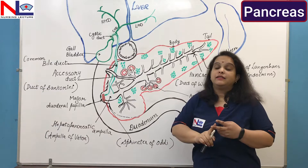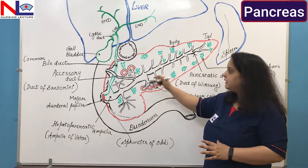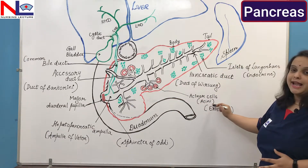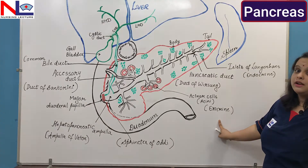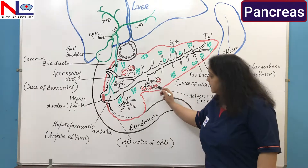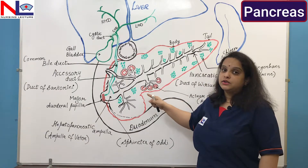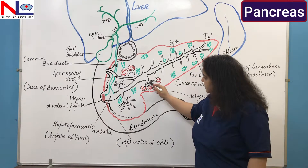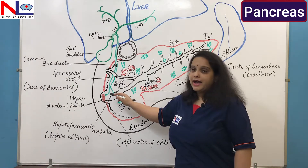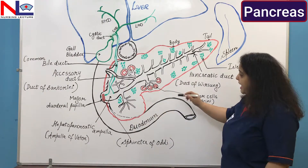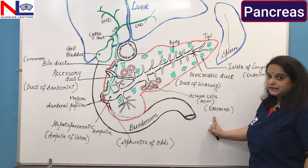In the whole pancreas there are two specialized cell types. In 99% of the pancreas, the cells are called acinar cells (or acini). These cells play a role as an exocrine gland because they contain zymogen granules and release certain enzymes through the duct system, which enter the main pancreatic duct and release into the duodenal part. Because their secretions come out through the duct onto the surface of the duodenum, they are called exocrine cells.